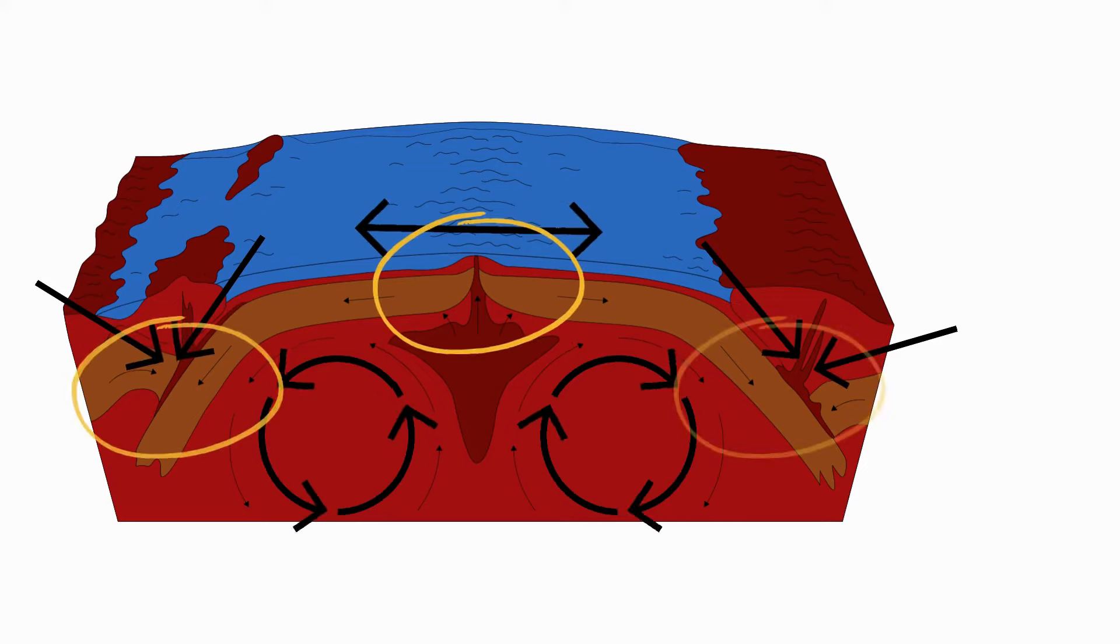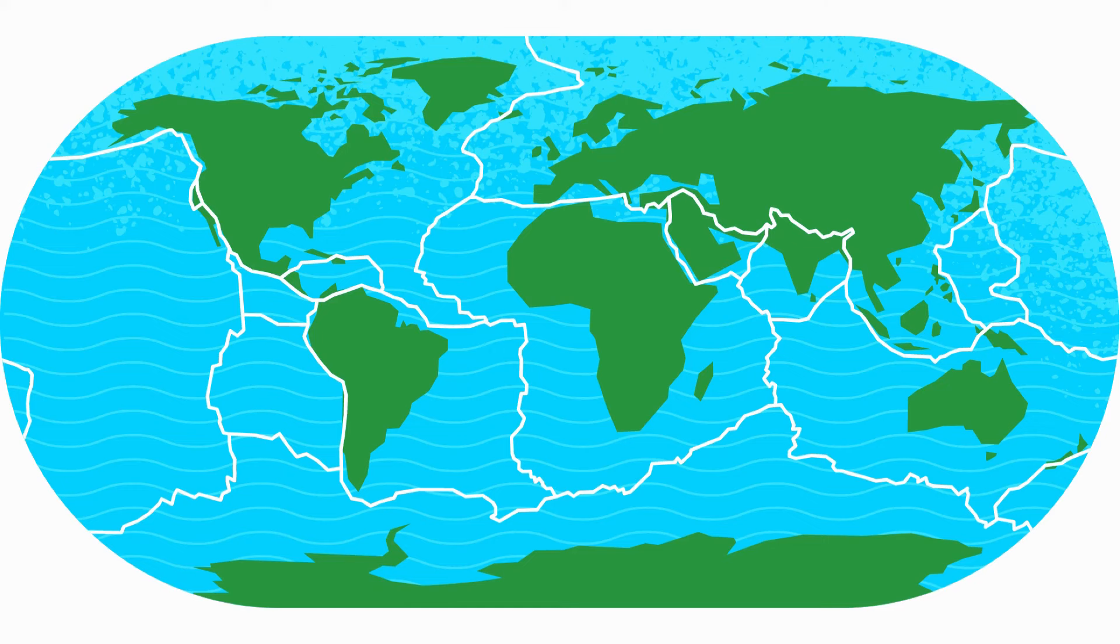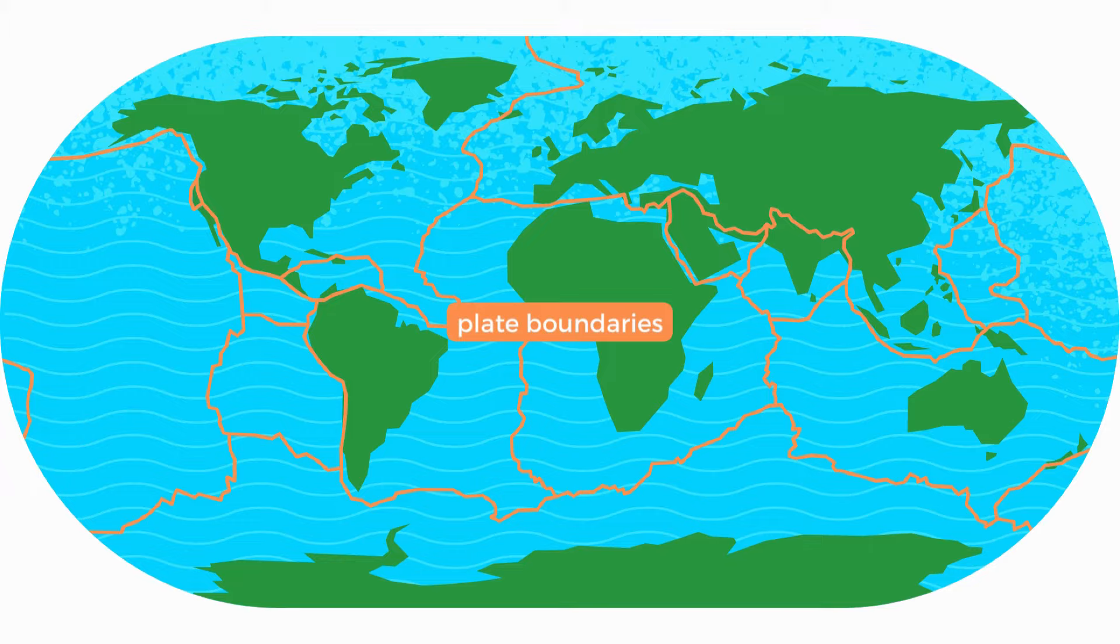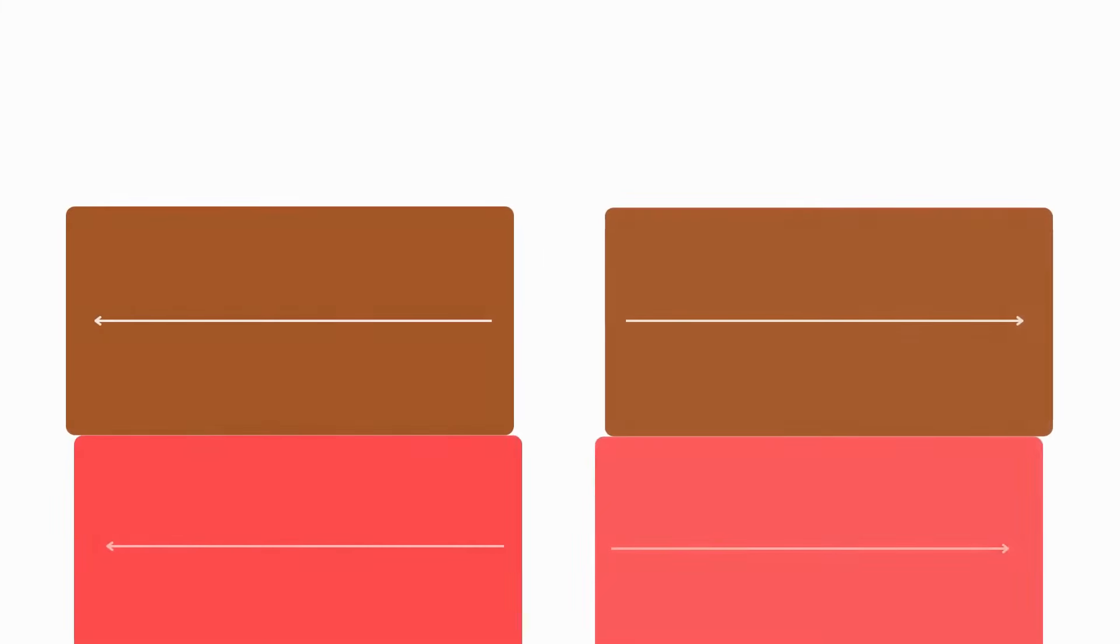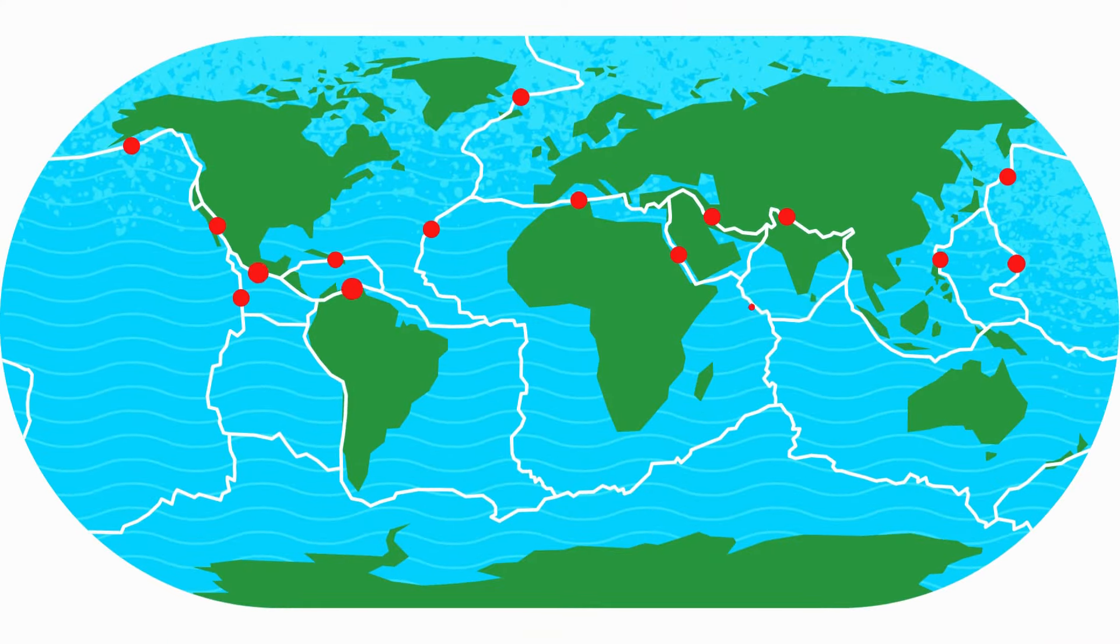This is very simplified, but the basic mechanics of this are enough to understand how plate tectonics work. The points where the tectonic plates meet are called plate boundaries. As we've just seen, the movement of the magma in the mantle will determine what type of plate boundary will exist between the different plates.